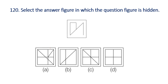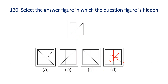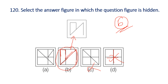Question 120: Select the answer figure in which the question figure is hidden. Observe the question figure — it has a diagonal and a box inside. Check each option: option B contains the same diagonal and box shape as the question figure. So option B is the answer.